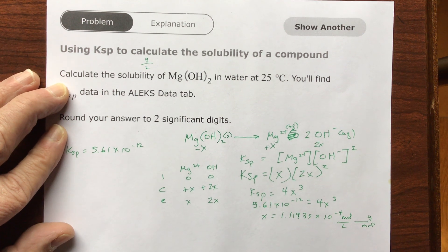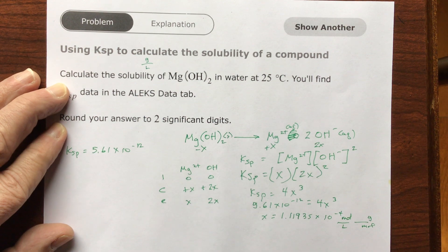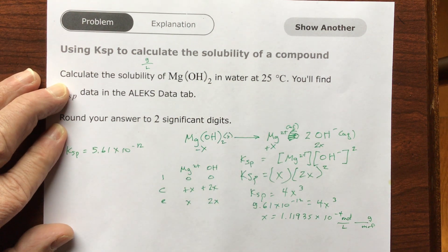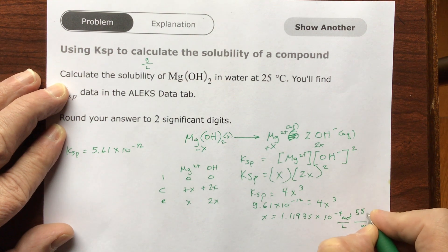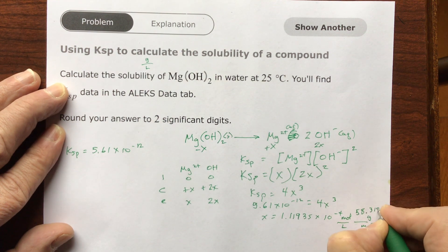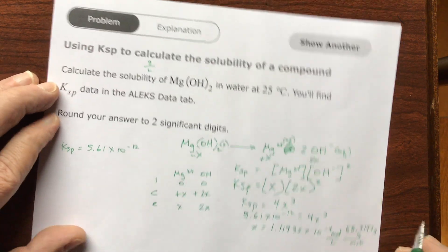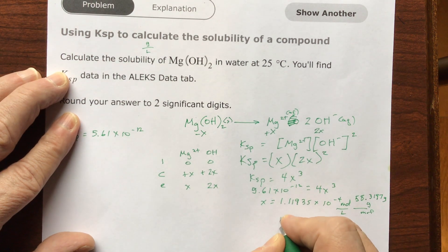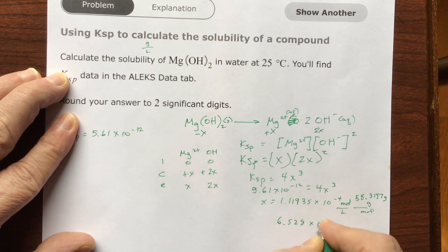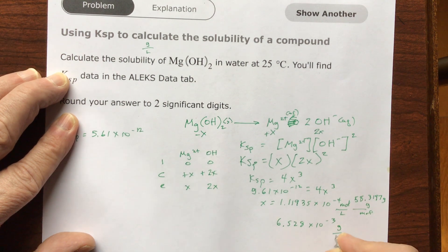Well, grams per mole is just the molar mass. So I can go to Google and ask for the molar mass of magnesium hydroxide, and they give it to me. And I write it down, 58.3197 grams for every mole.